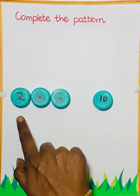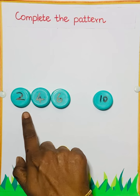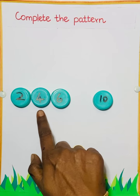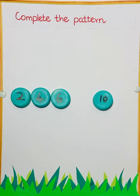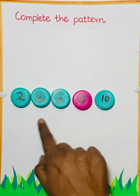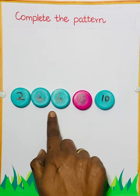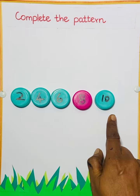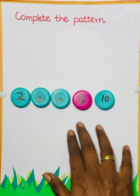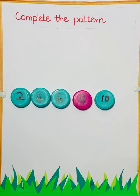So what will be the number? See the numbers are skip counting of 2. See 2, 4, 6. Then the next number will be 8. Now read 2, 4, 6, 8, 10. So it is a skip counting of 2 or the multiples of 2.